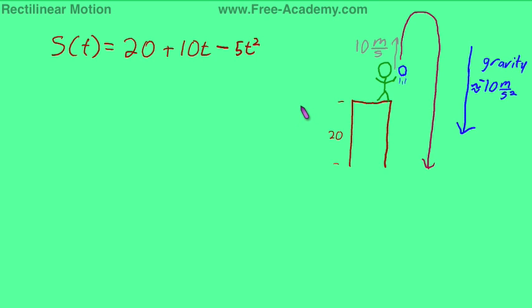What is rectilinear motion? Rectilinear motion is, in layman's terms, the movement of something over the course of time. The function that I've given here is S of T, T of course being time, which is very common, but it could be anything else. And S is position.